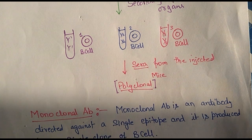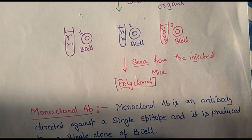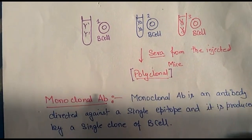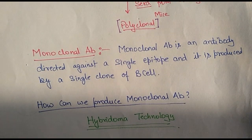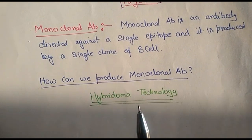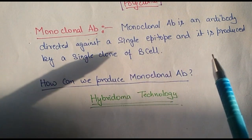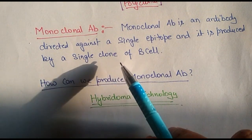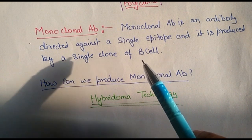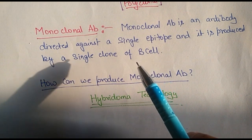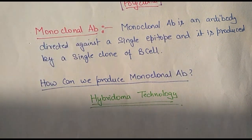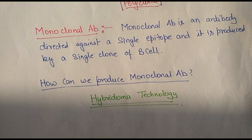So what is a monoclonal antibody? A monoclonal antibody is an antibody directed against a single epitope, and it is produced by a single clone of B cells. This is one of the most apt definitions of a monoclonal antibody — it should be directed against a single epitope and produced by a single clone of B cells.